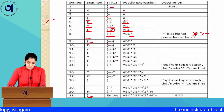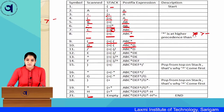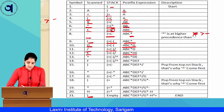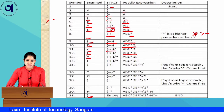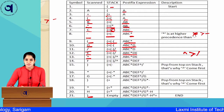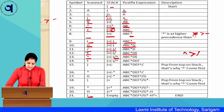Opening bracket encountered — push to stack. D is an operand — Y: A, B, C, star, D. Slash is an operator — opening bracket is on top, so push slash directly. E is an operand — Y: A, B, C, star, D, E. Cap (exponent) has highest precedence, higher than slash, so push cap. Stack now has slash and cap. F is an operand — Y: A, B, C, star, D, E, F.